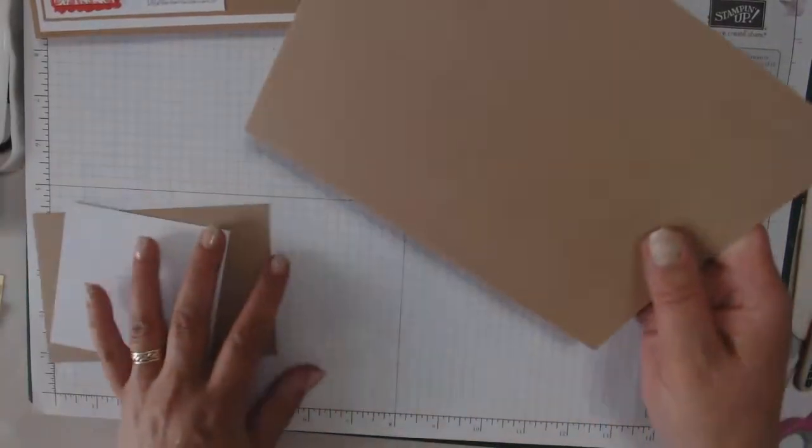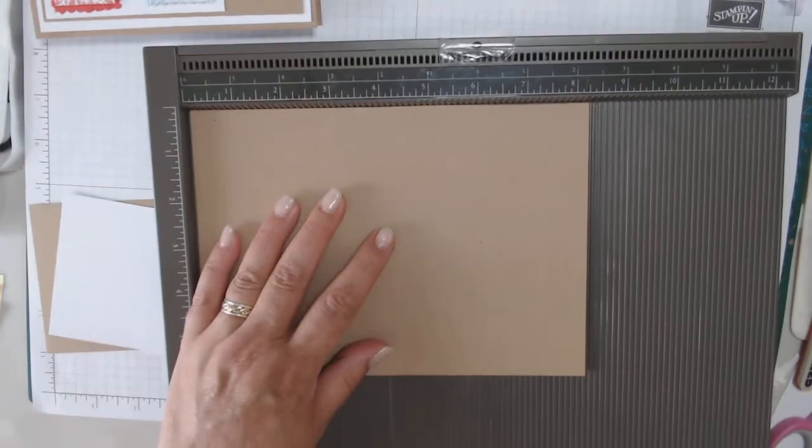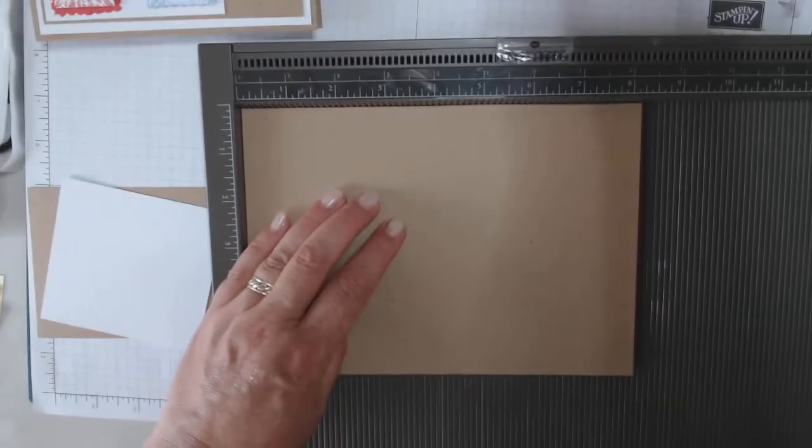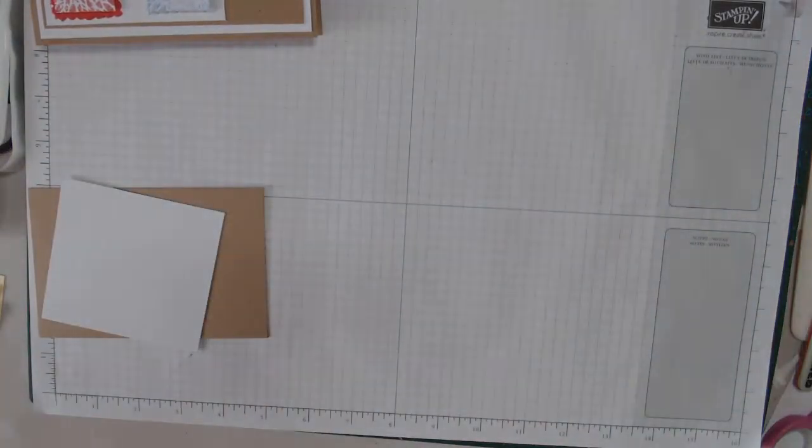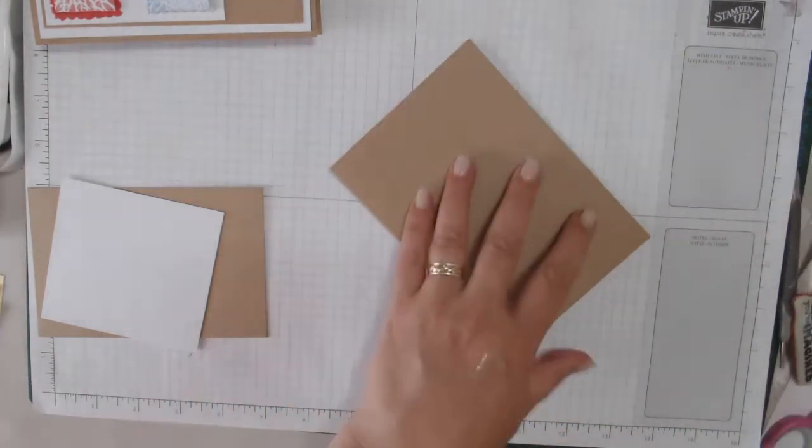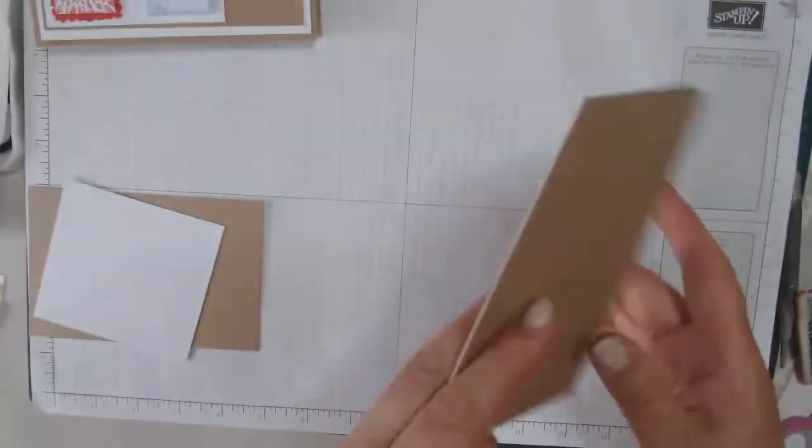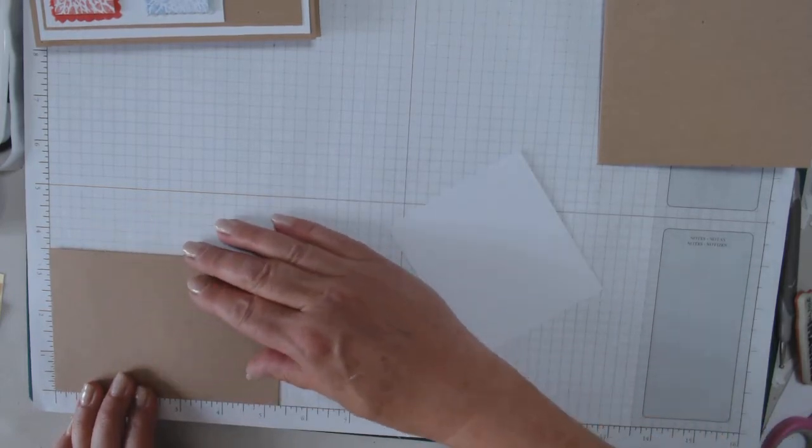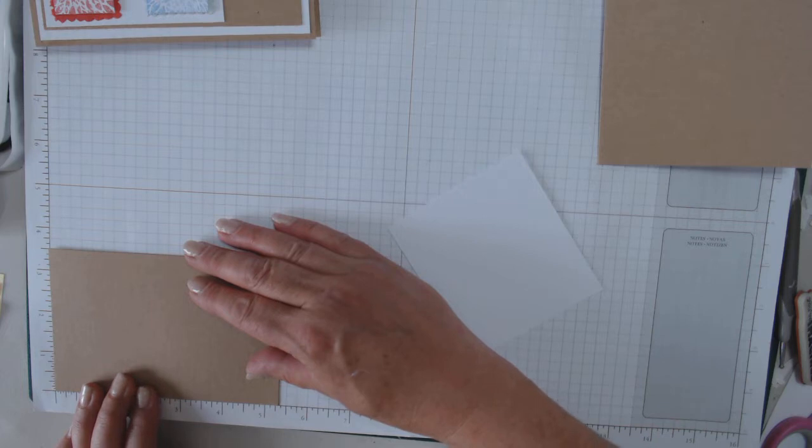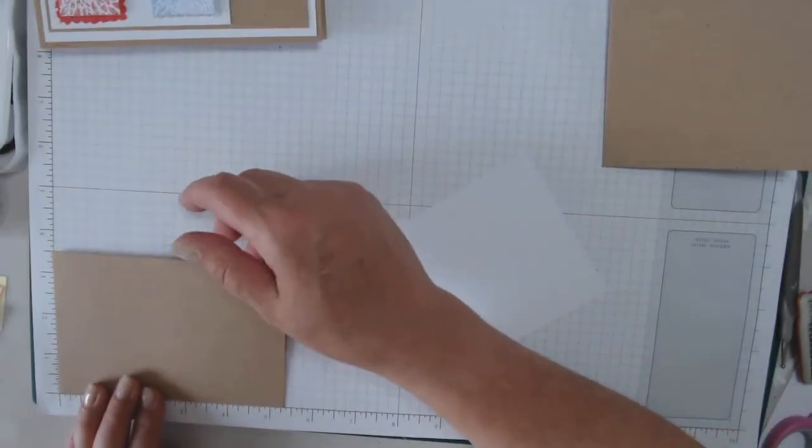So first you will need some craft card, five and seven eighths by eight and a quarter, scored at four and an eighth. Then you will need a piece of craft card that is three and a half by five and two eighths. Five and a quarter, maybe five and three eighths, just a tad over.